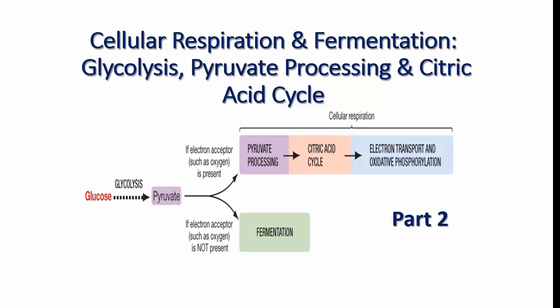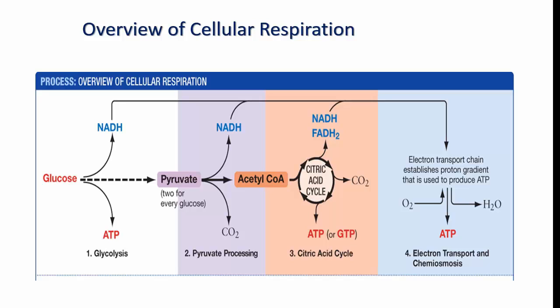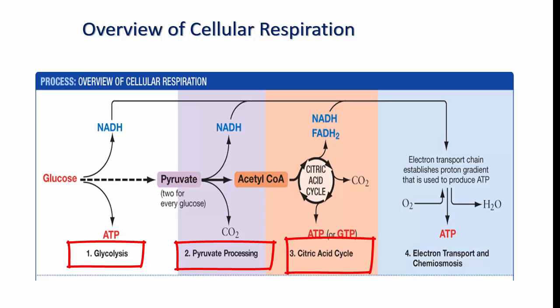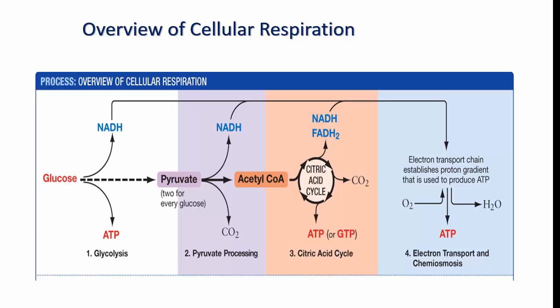I will leave out the fourth pathway — the electron transport chain and oxidative phosphorylation — for another video. In the presence of molecular oxygen, cells produce ATP in a process consisting of four metabolic pathways: glycolysis, pyruvate processing or oxidation, the citric acid cycle, and the electron transport chain or oxidative phosphorylation, also known as chemiosmosis. These pathways are interconnected, and each one has its own distinctive starting molecule and a specific set of products.